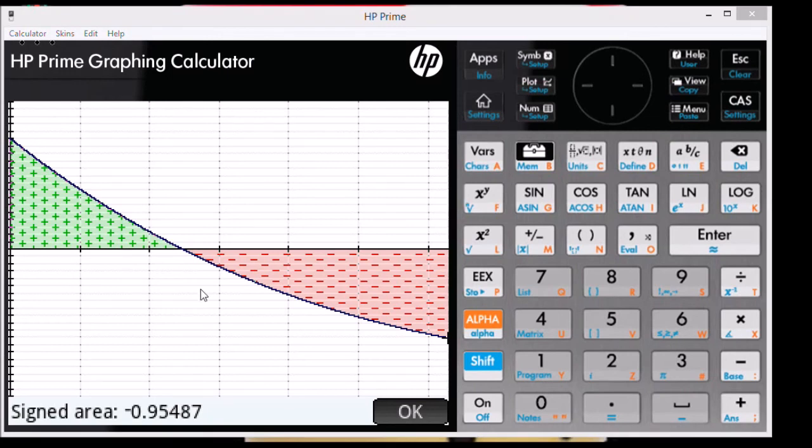So for this particular example, the integral of 1.5 times cosine of the square root of x is approximately negative 0.95487. You see a lot more red here than you do see green.